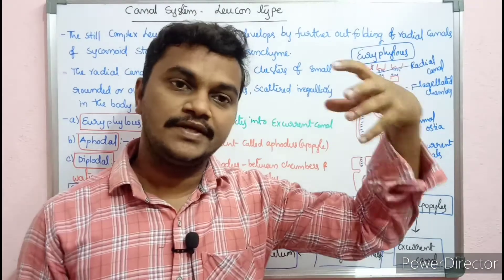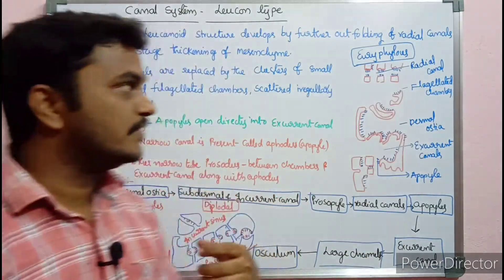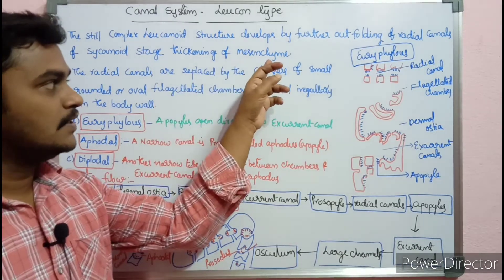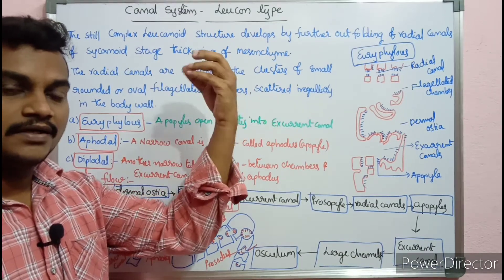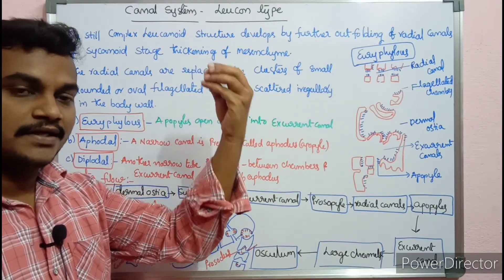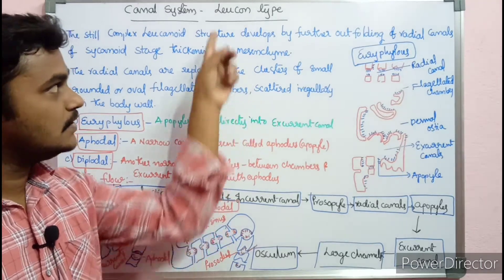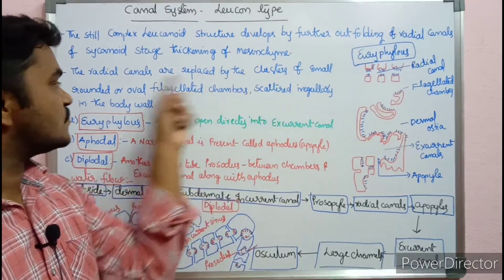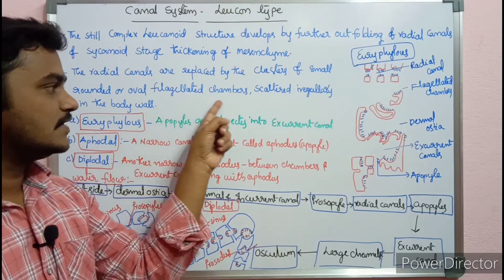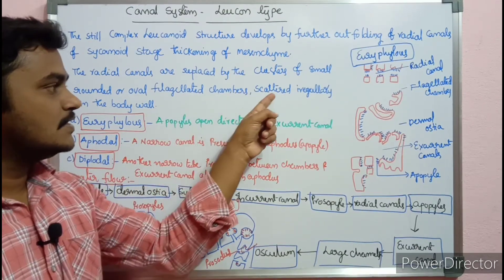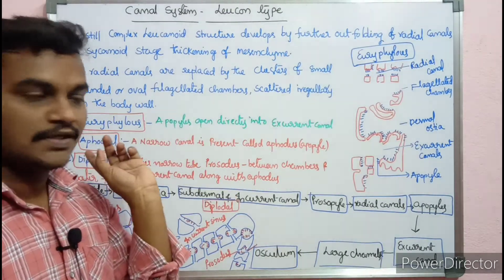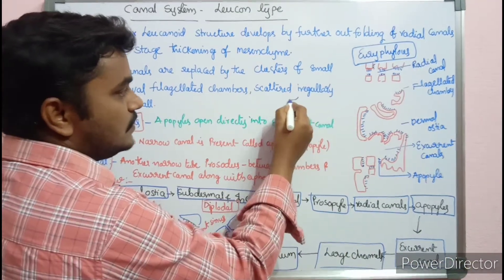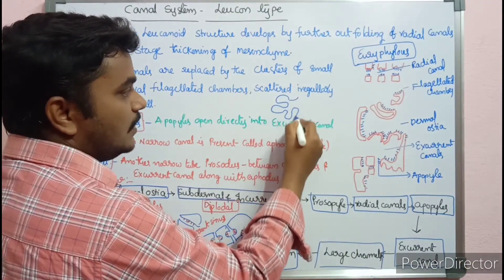The Leuconoid structure develops by further folding of radial canals. I will show you the position of radial canals. In this system, the radial canals are replaced by clusters of small, rounded, oval flagellated chambers scattered irregularly in the body. Because of these foldings, the mesenchyme will form further.